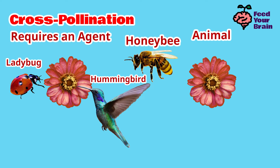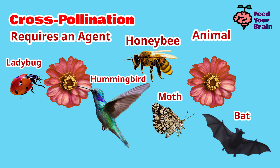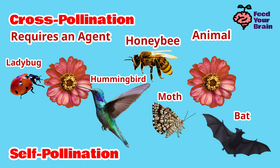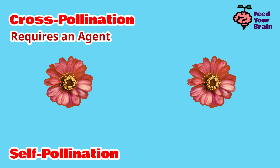Not only do beetles drink the nectar, but they also eat the petals and other parts of the flower. Moths are pollinators. And did you know that bats are pollinators? They pollinate over 300 types of fruits, such as mangoes, bananas, and guavas. The other type of pollination is self-pollination, which does not require any agent — no help from honeybees or bats.